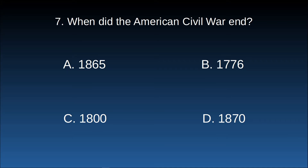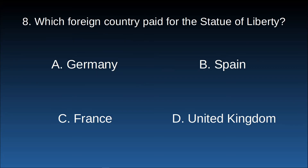When did the American Civil War end? A. 1865. B. 1776. C. 1860. D. 1870. The answer is A. 1865.